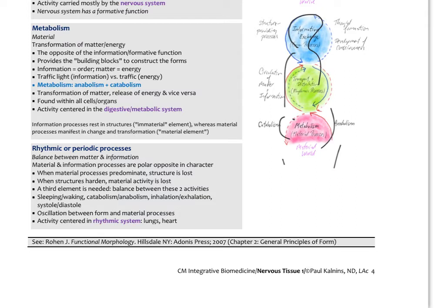For further reading on this threefold physiology framework, Johannes Rohen — a very famous anatomist — wrote a book called Functional Morphology that discusses physiology and anatomy from the perspective of these threefold principles. This idea also appears in anthroposophy and anthroposophic medicine, and goes back to alchemy — Paracelsus talked about salt, sulfur, and mercury processes — and in Ayurveda as well. Rohen takes it into a modern perspective in a very integrative way.